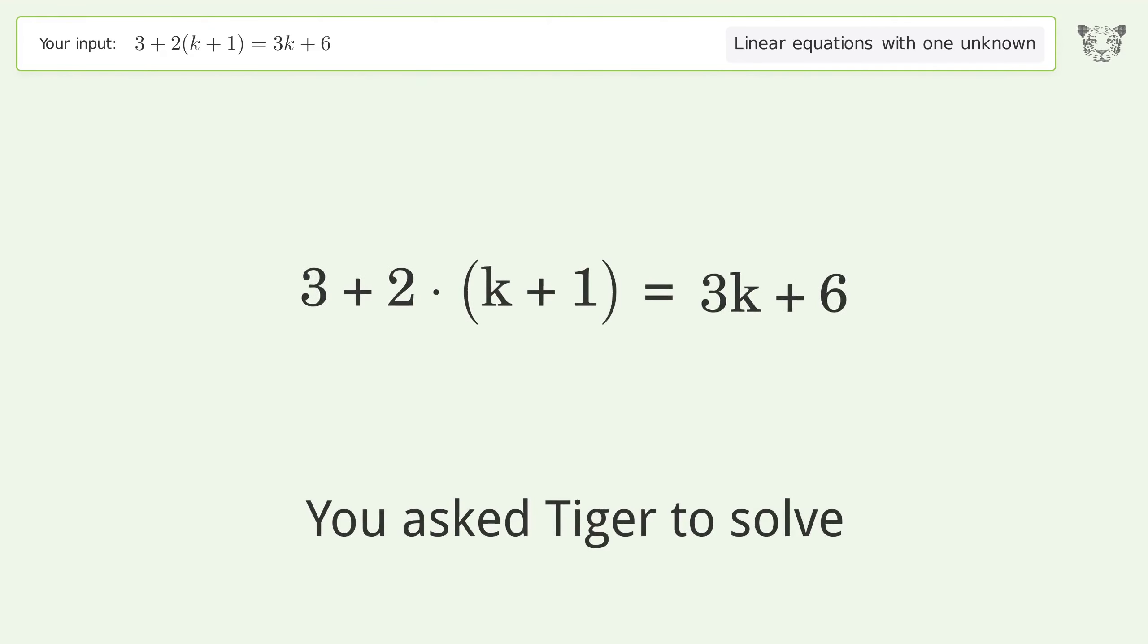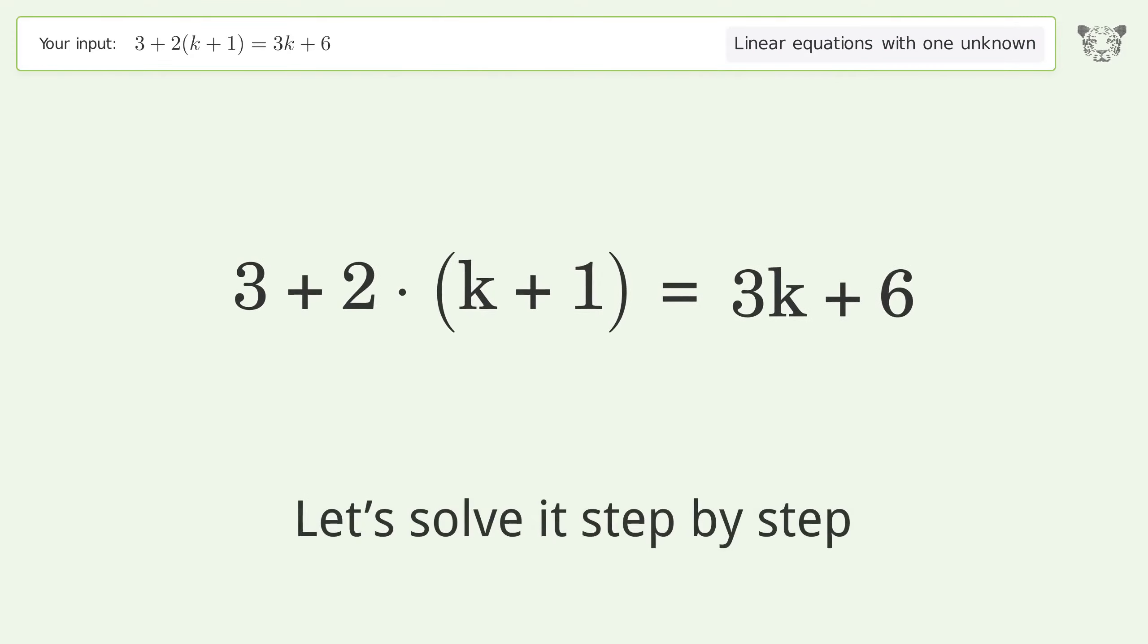You ask Tiger to solve this. It deals with linear equations with one unknown. The final result is k equals negative one. Let's solve it step by step. Simplify the expression.